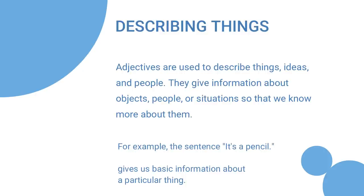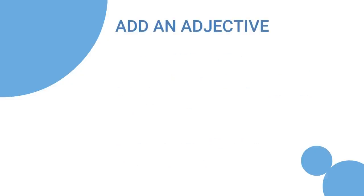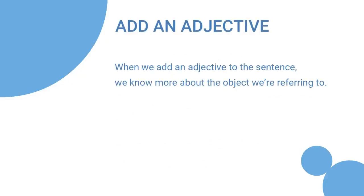For example, the sentence 'it's a pencil' gives us basic information about a particular thing. Add an adjective. When we add an adjective to the sentence, we know more about the object we're referring to. It's a short pencil.